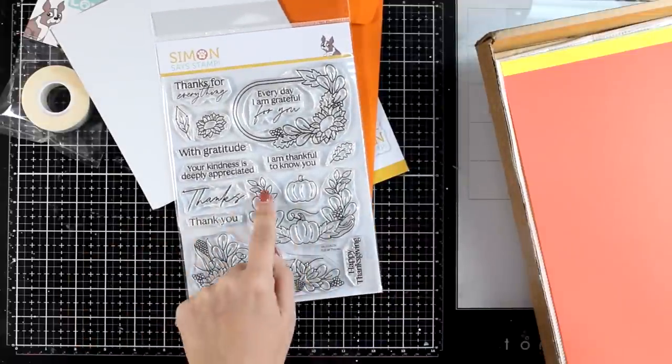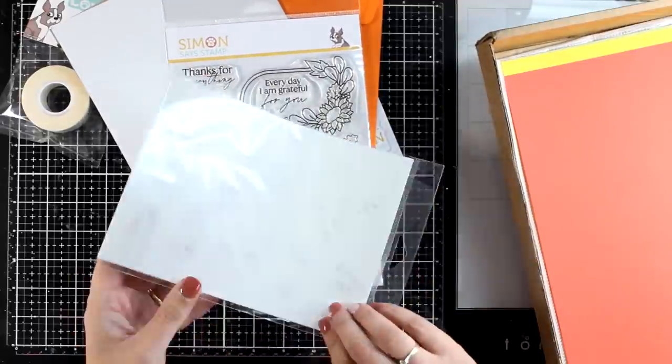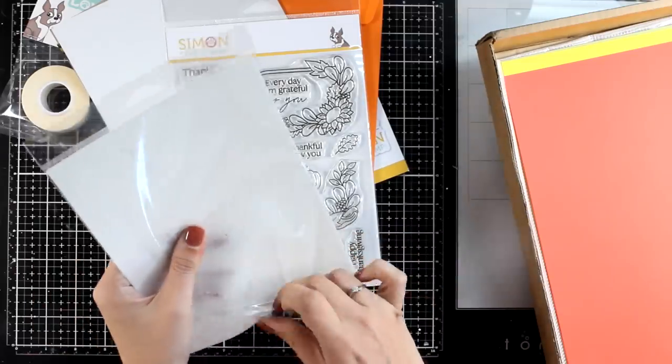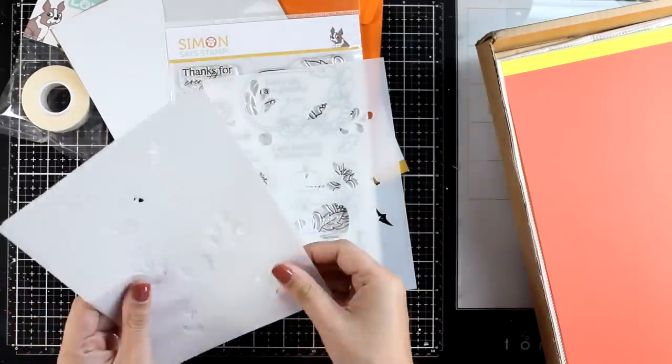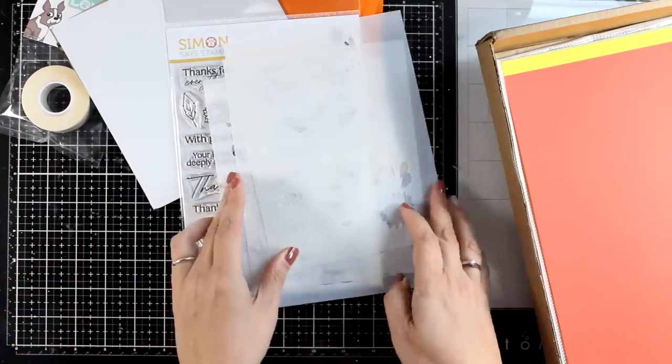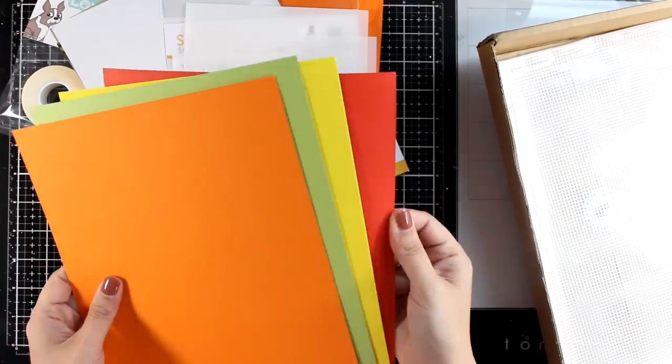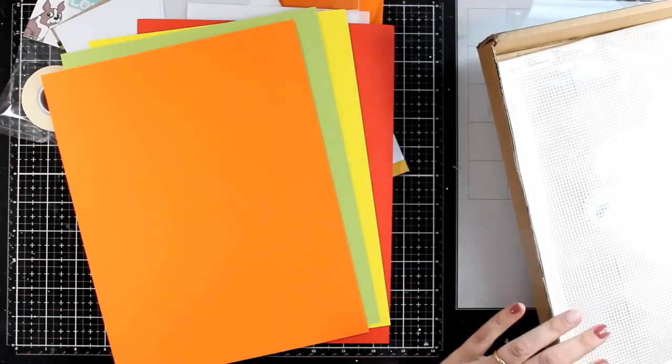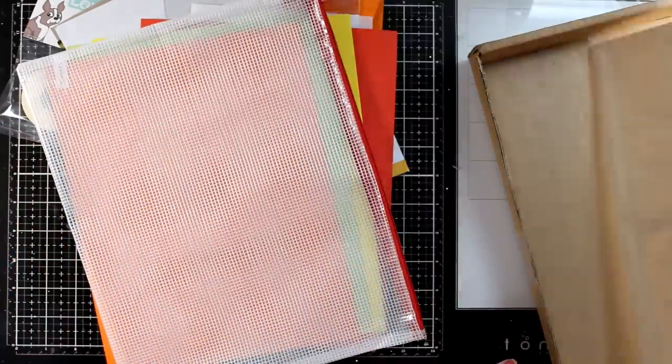Then this is the stamp set included in the kit, perfect for the season - lots of pumpkins, leaves, many sentiments. These are stencils, three different ones in one set that match perfectly with the images on the stamp set. And you get four different colors of cardstock.